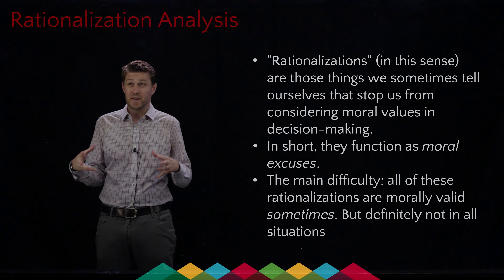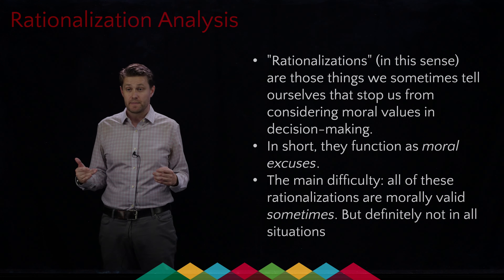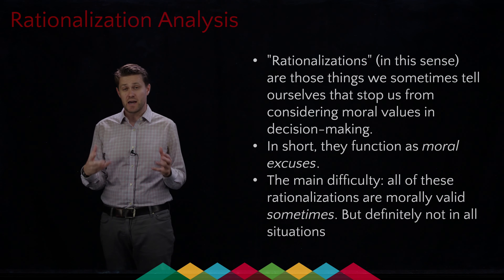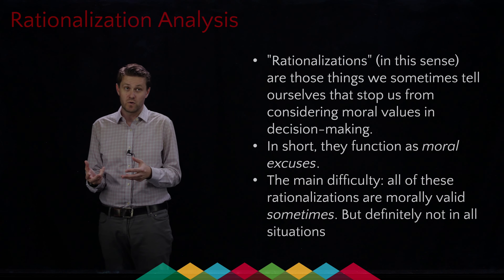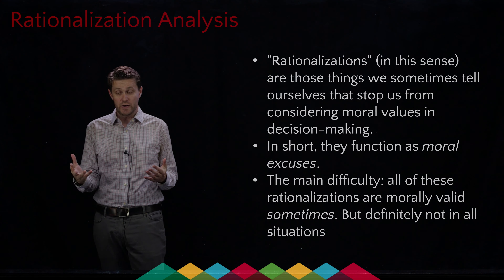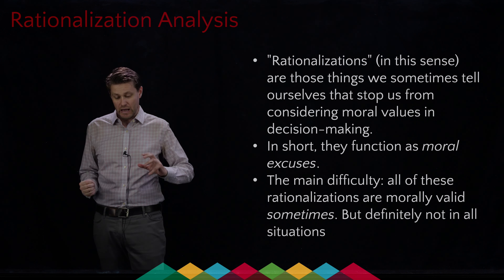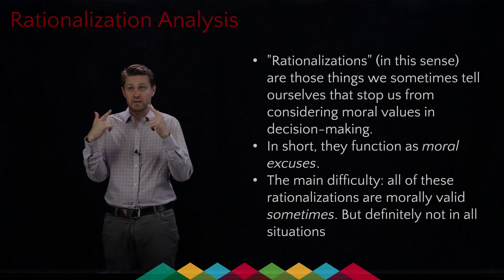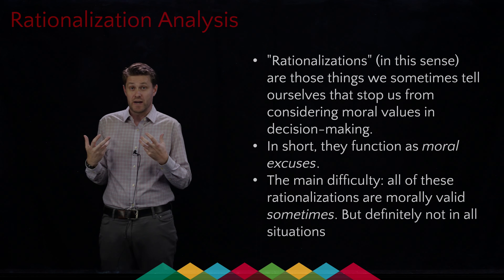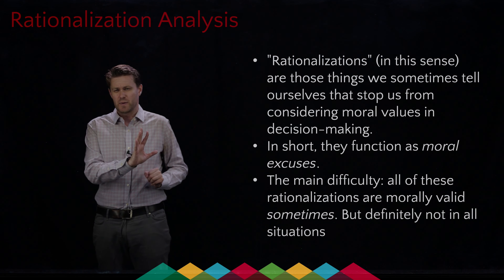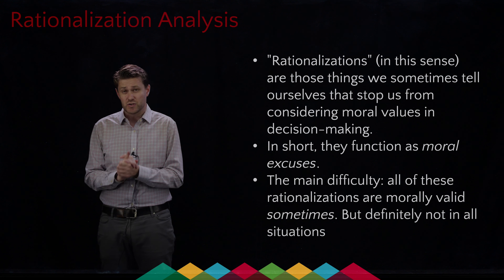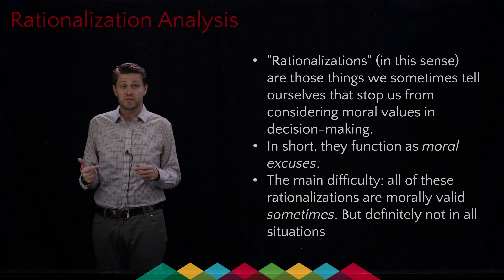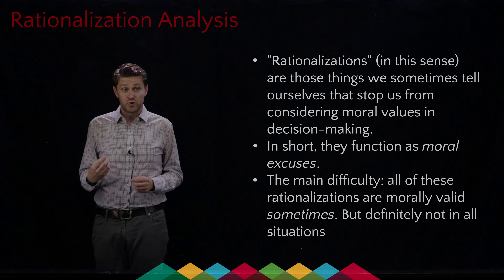What's important about this moment is that we all have these moral compasses, and they are usually pretty good. We've been raised by good people, in communities that care about us, that have taught us the difference between right and wrong. A lot of bad things that happen in this world don't happen because people are confused about right and wrong. They happen because people tell themselves a moral excuse that short-circuits the ethical part of their brain, saying, I'm not going to worry about the ethics because of this other thing. The rationalization analysis is trying to think about those things we tell ourselves to excuse ourselves from thinking about ethics.